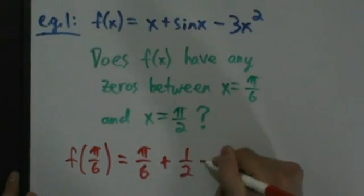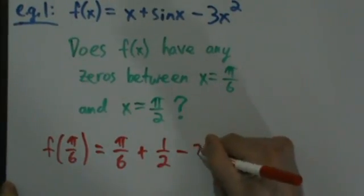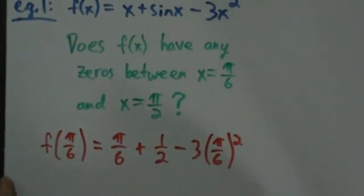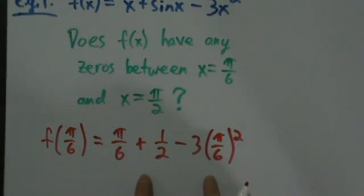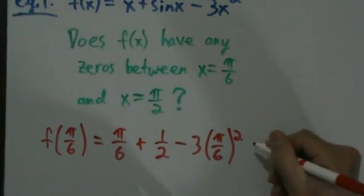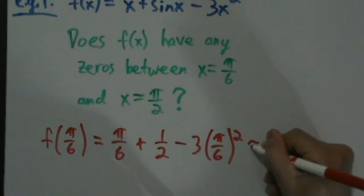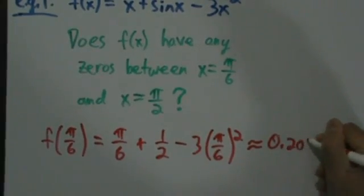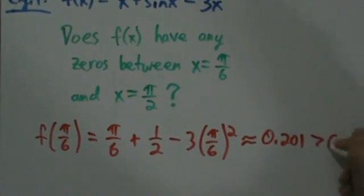So that's 3 times π/6 squared. It's not really obvious whether it's positive or negative, but we can toss it into a calculator and we'll see that it's approximately 0.201, which is positive.